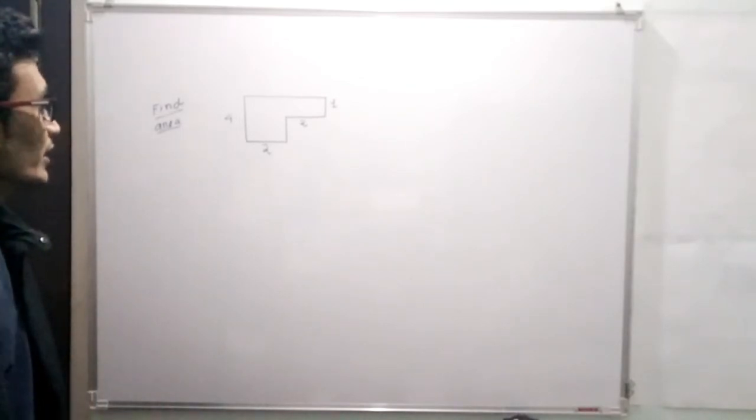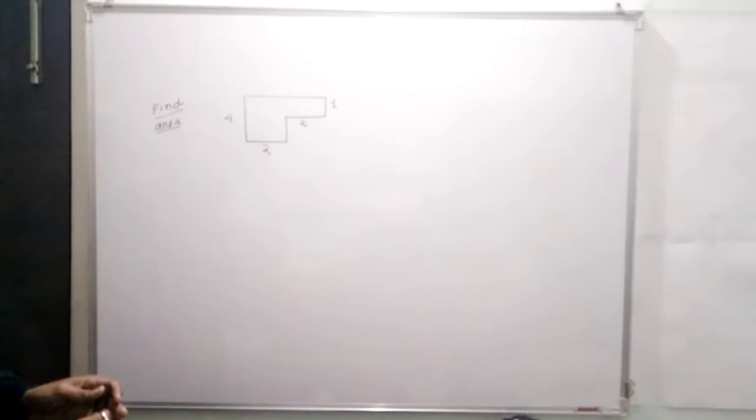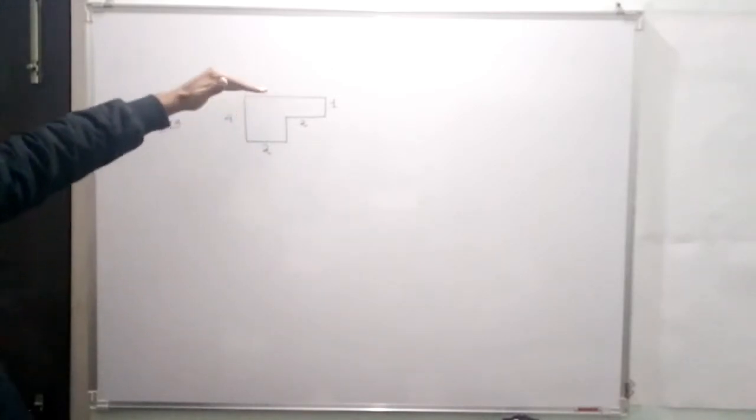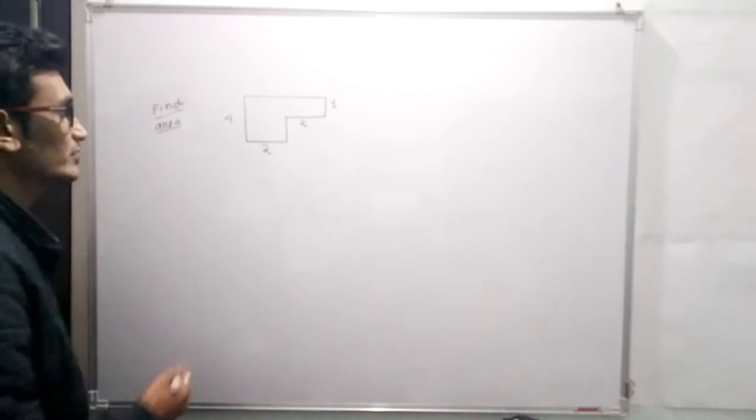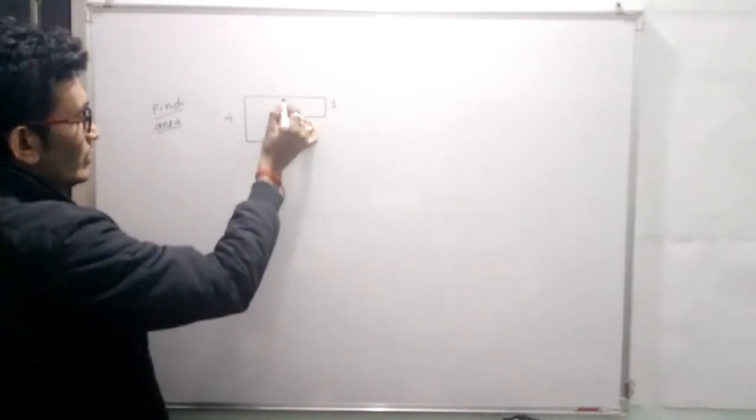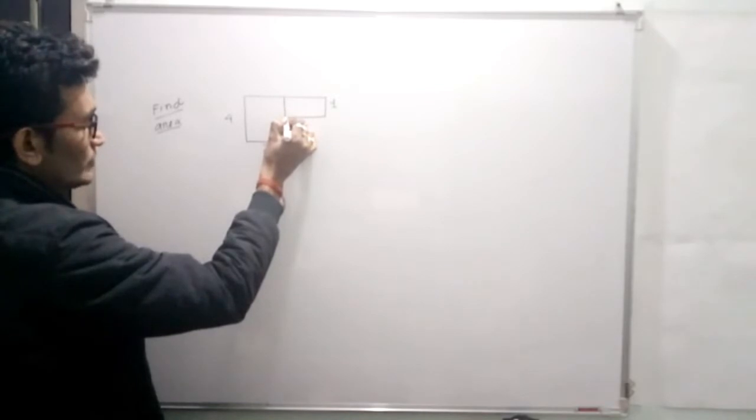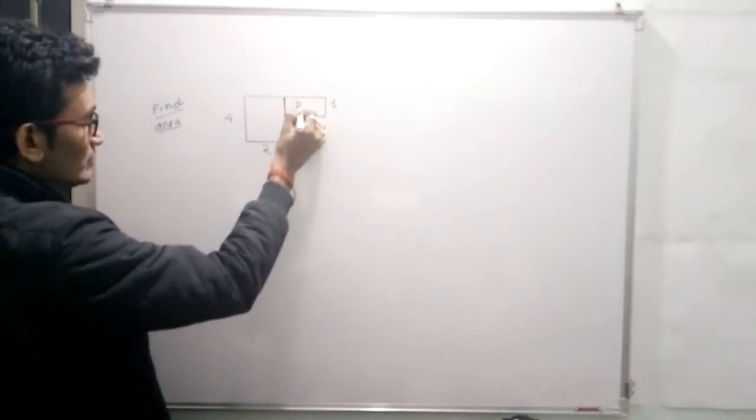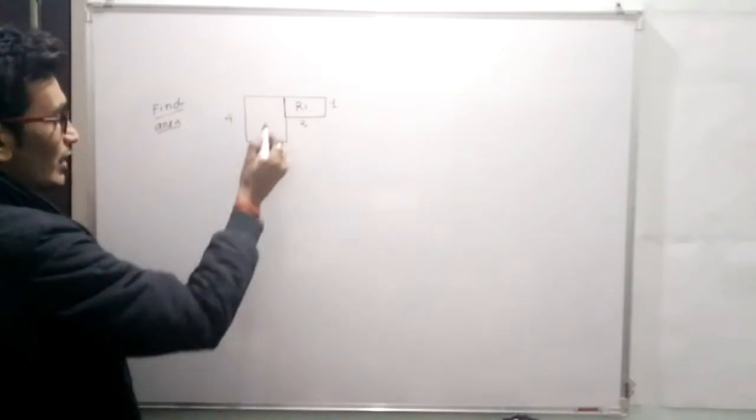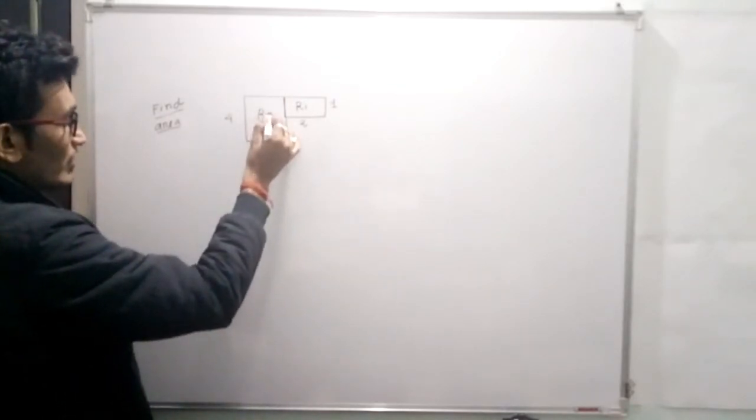We can divide this given figure into two different figures. Suppose if we join the line, we get a rectangle—this is rectangle 1—and this becomes rectangle 2.